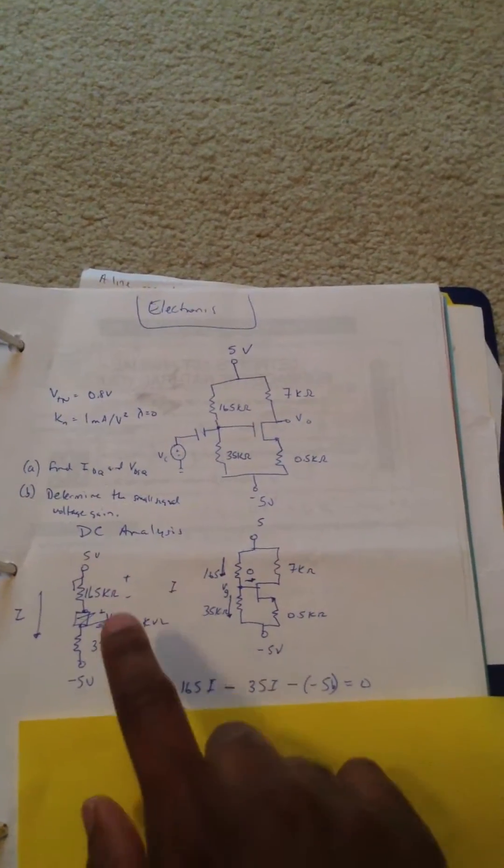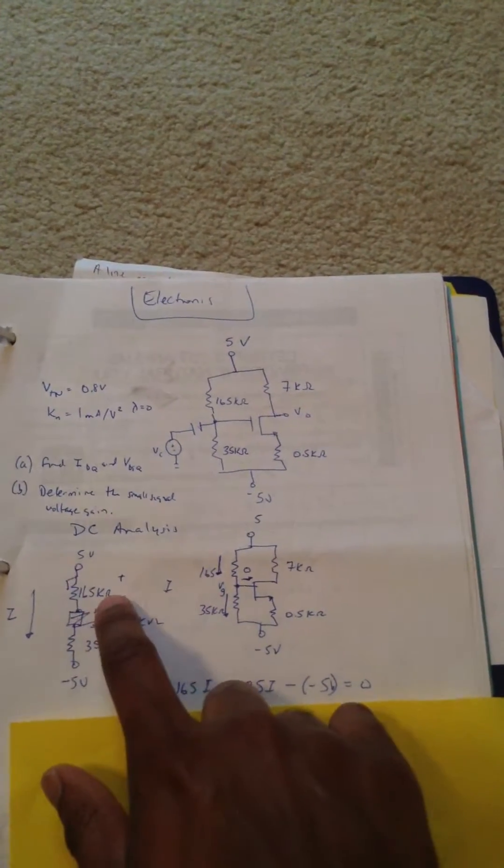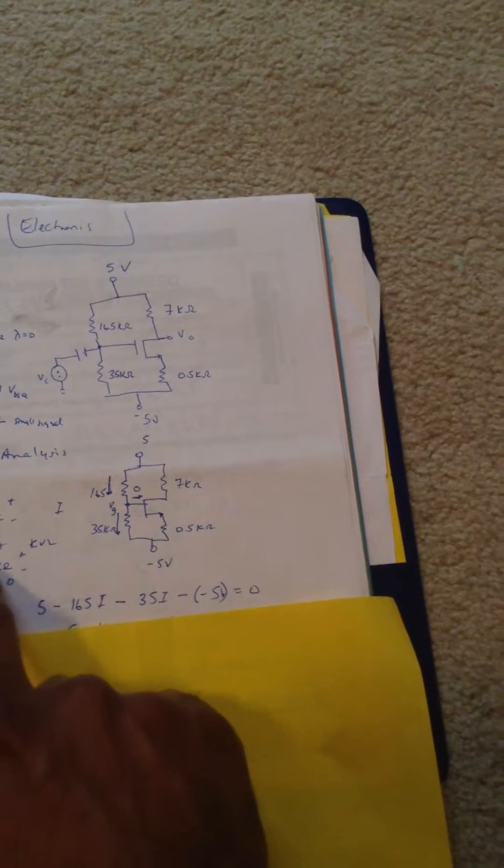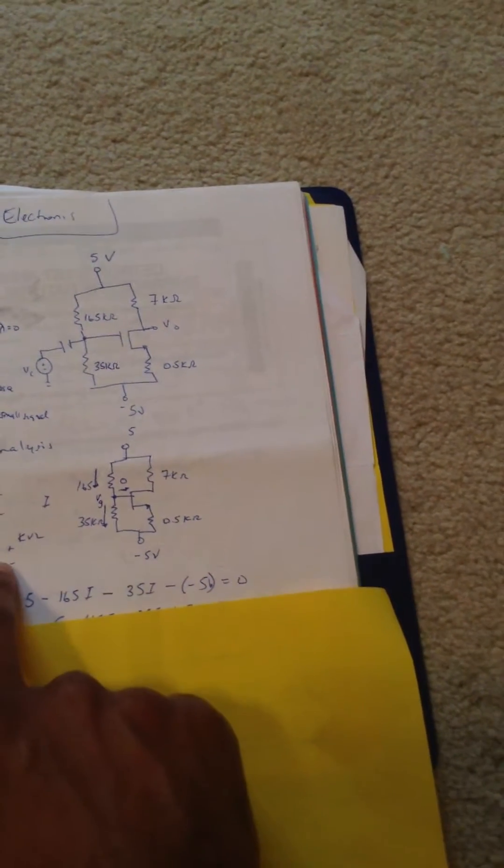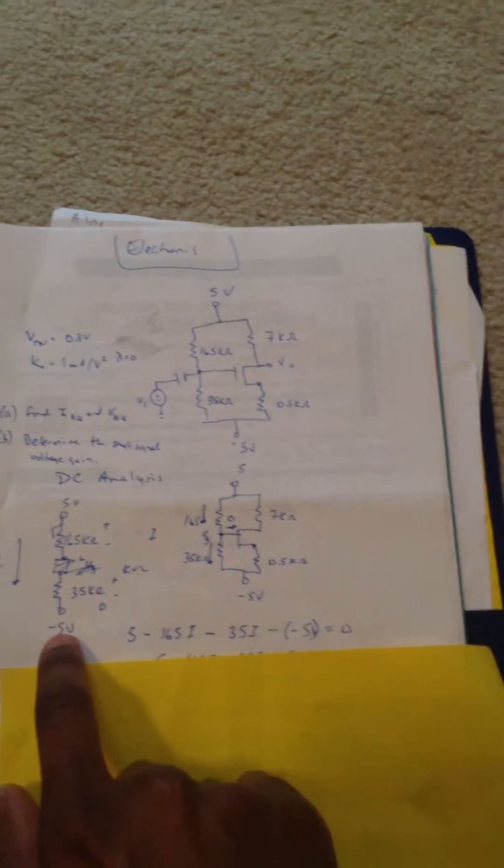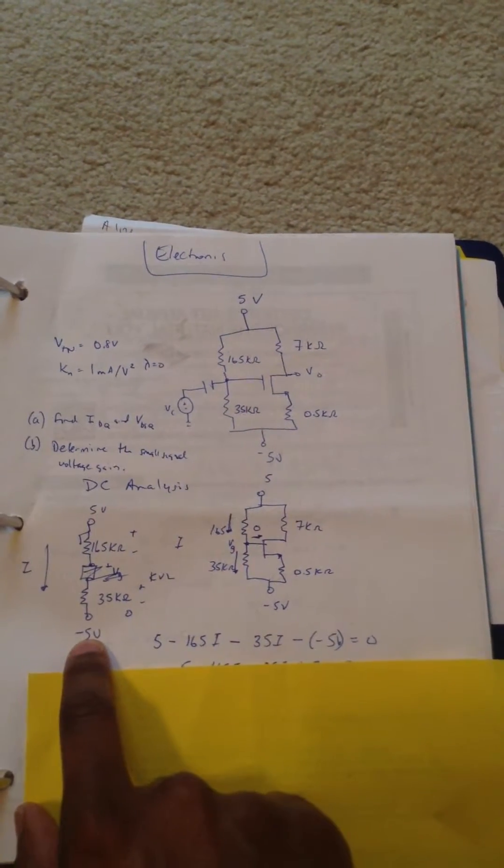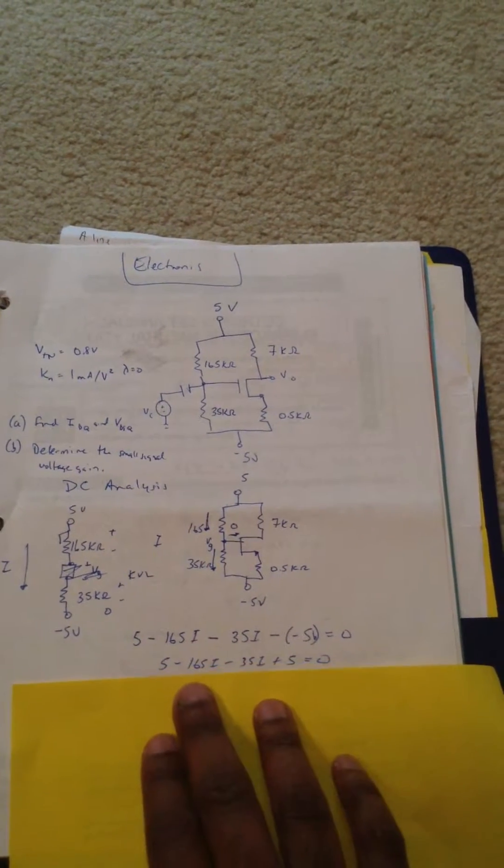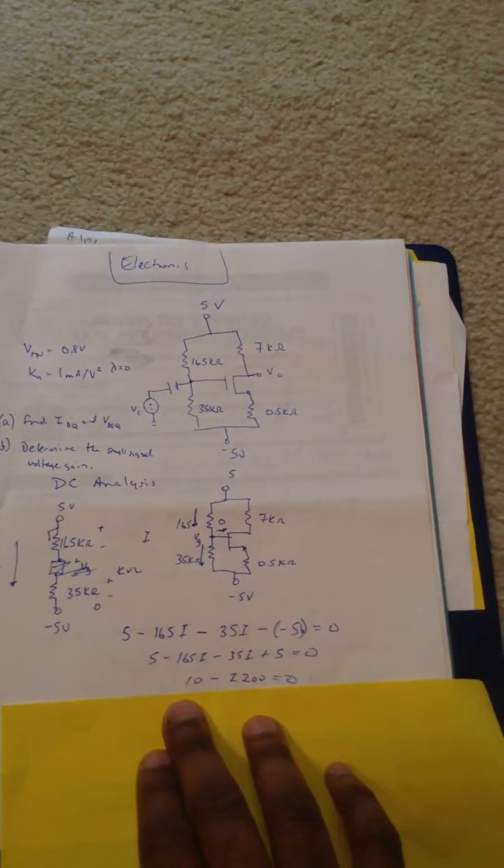We have 5 minus the current times 5 minus the current times the resistance minus the current times that resistance minus negative 5. And that's basically what I have here. We're going to solve for I. Simplify. And I is equal to 0.05 milliamps.